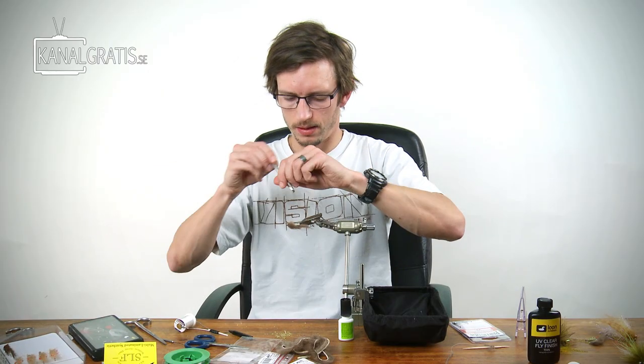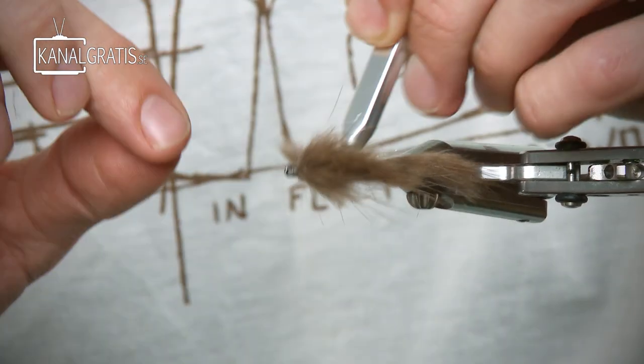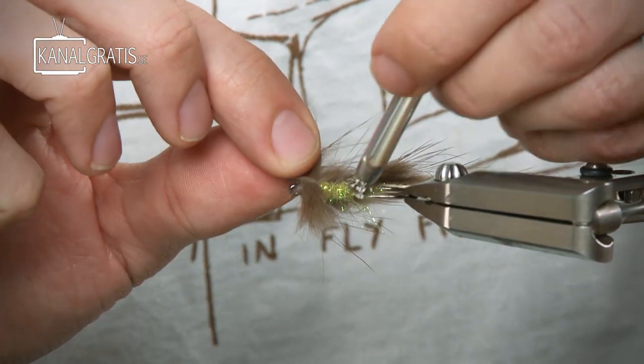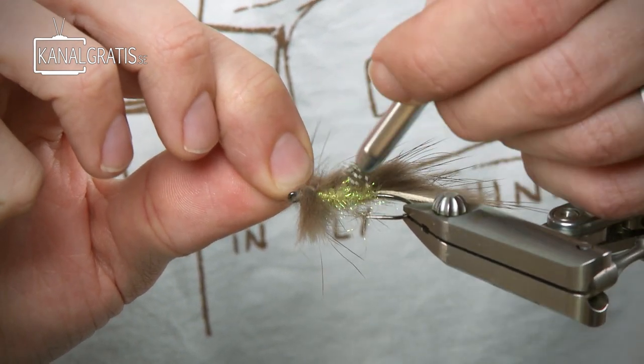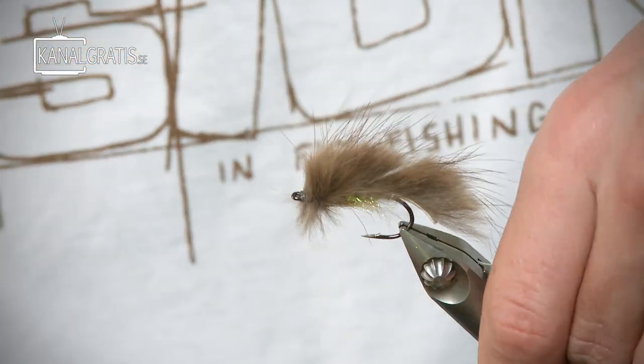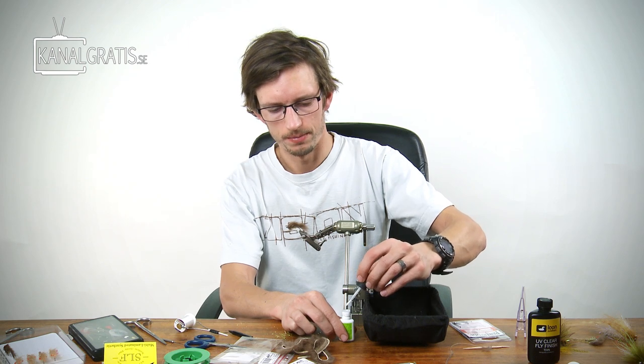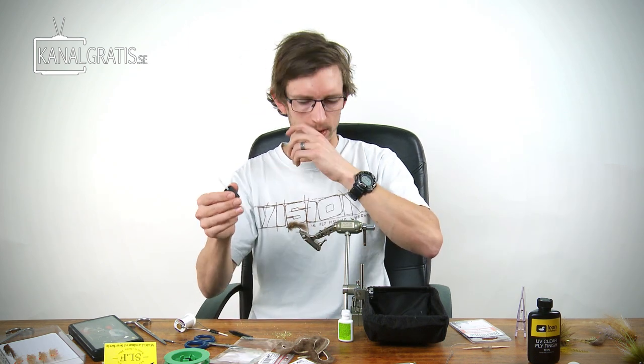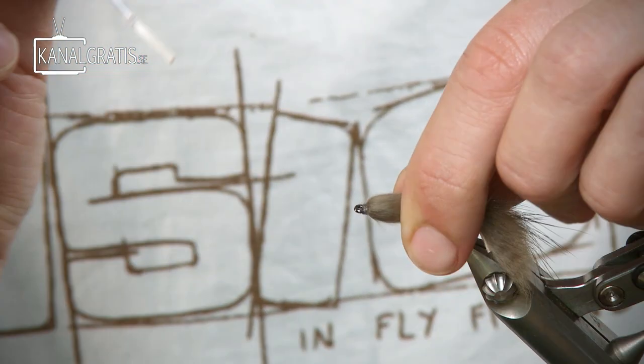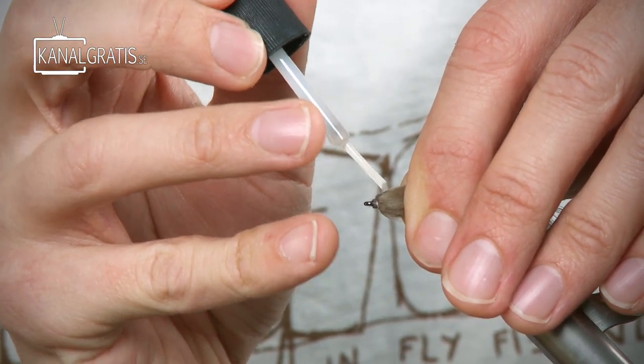Take your dubbing brush and brush out the body so you get this contrast. Then again I go with a little bit of glue just before I'm going to put a head on it. If you glue it, it's easier to work with the UV glue later on. Just hold it in the shape that you want it and dot the glue onto the head. You can still work it as you want. It doesn't have to be perfect.